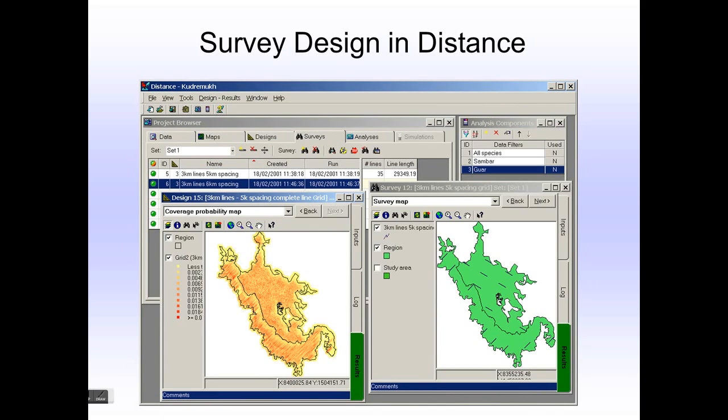In addition to analysis of surveys, Distance also has a survey design engine that allows you to create survey designs that tell you where to go in your study area to facilitate the data collection process. So here you see an example again of a project browser describing a number of different survey designs, and again a comparison of survey number 12 with design number 15, highlighting the characteristics of both the surveys and the designs that led to the surveys. I hope that's helpful for you.